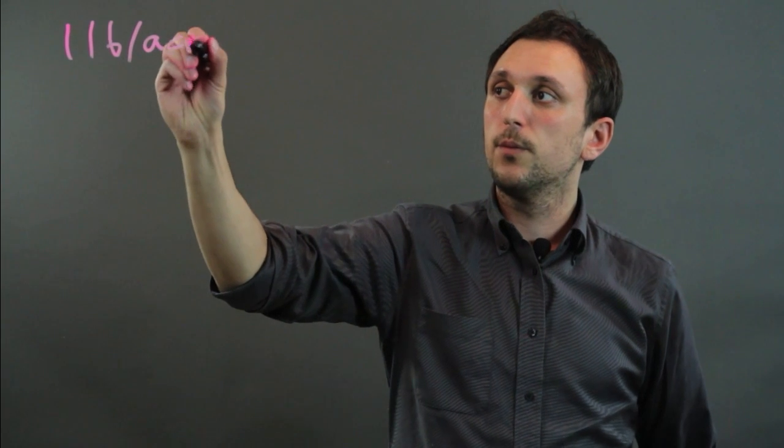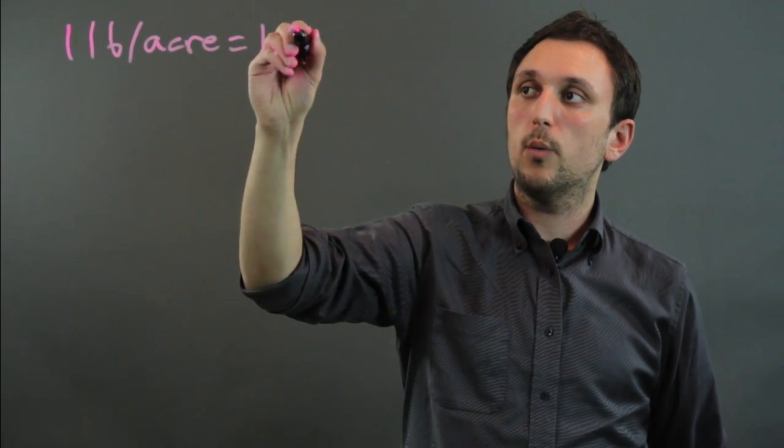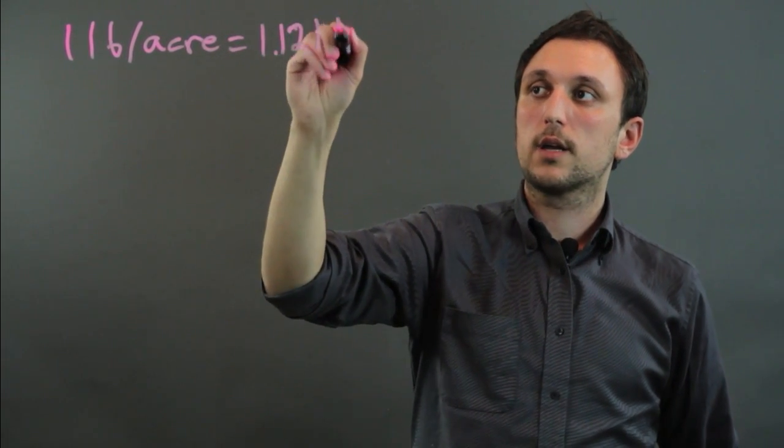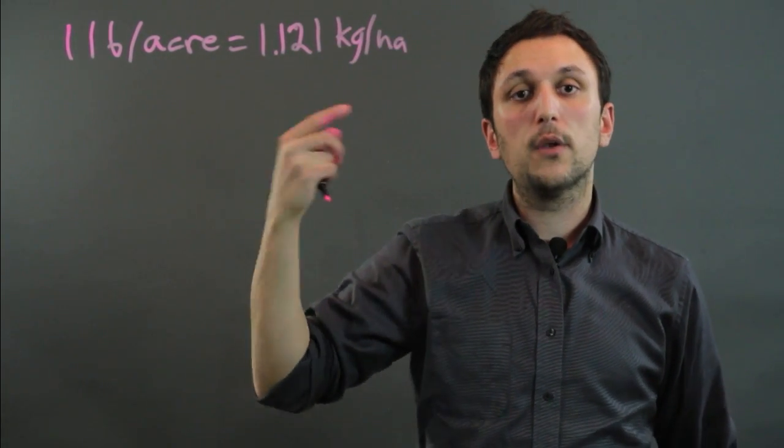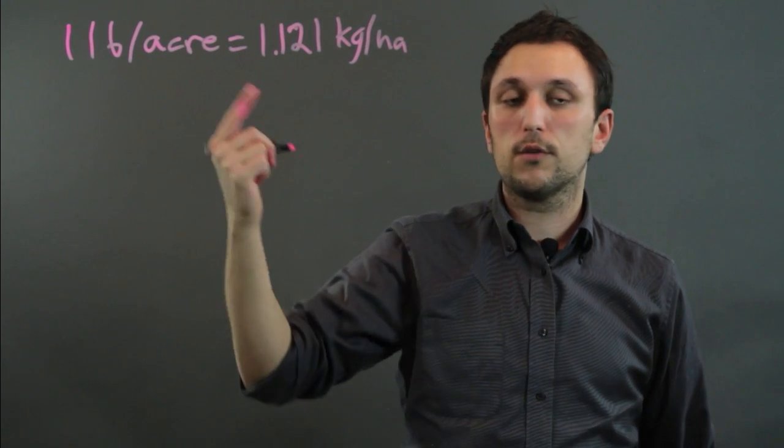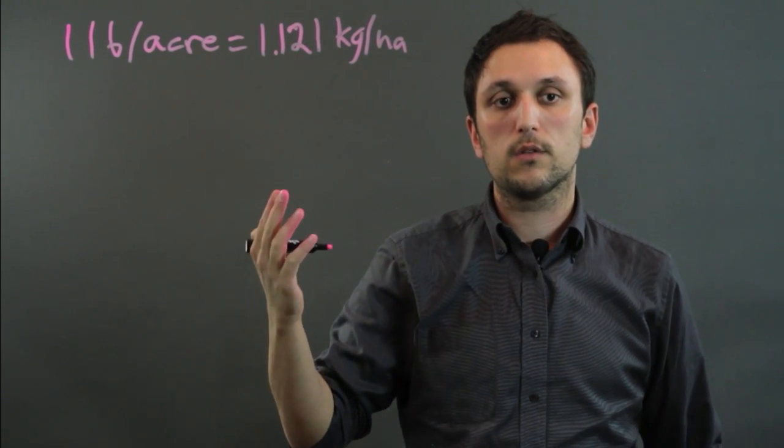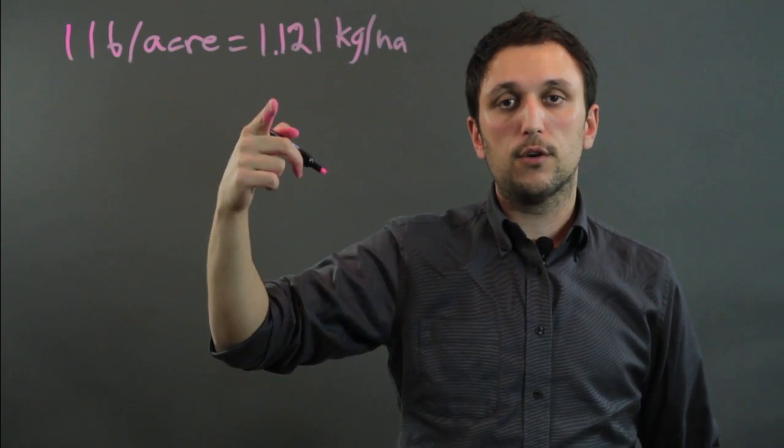Now the basic conversion is one pound per acre equals 1.121 kilograms per hectare. Now a hectare is about 10,000 square meters and an acre is about 4,840 square yards. So this is the basic conversion.